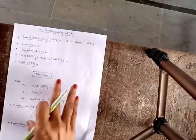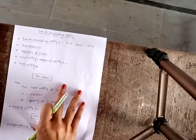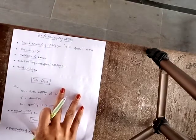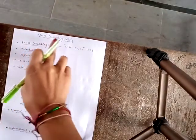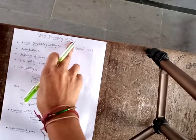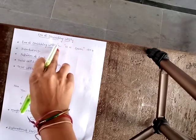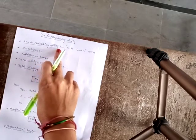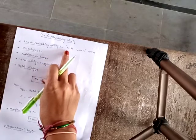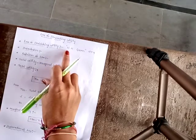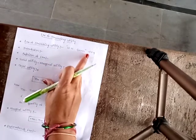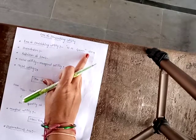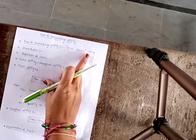Hi students, today we will learn about one of the important questions of the law of diminishing utility. The law of diminishing utility was originally explained by H.S. Gossen in 1854. Hence, it is called Gossen's first law.